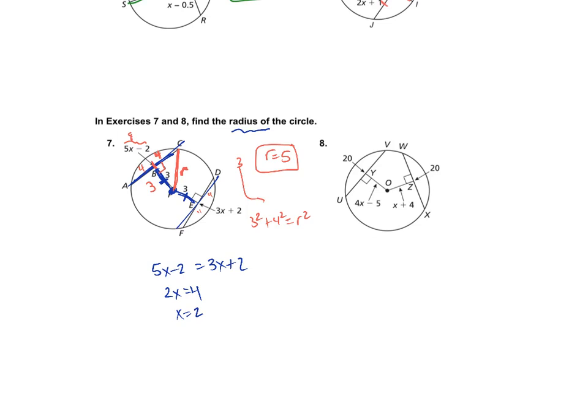Moving on to number 8. Same situation. These two will be congruent because they are equidistant. I know that this piece is 20 and that piece is 20. So the chords are congruent, which means they're the same distance from the center. So 4X minus 5 equals X plus 4. 3X equals 9, X is 3. But they want this radius.